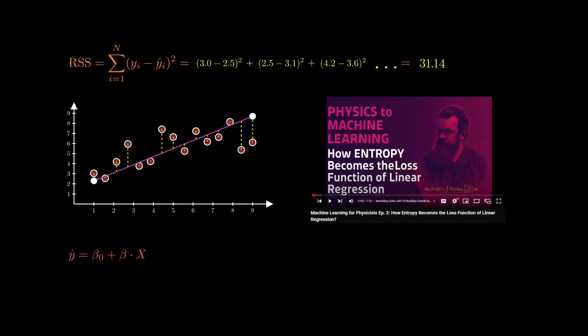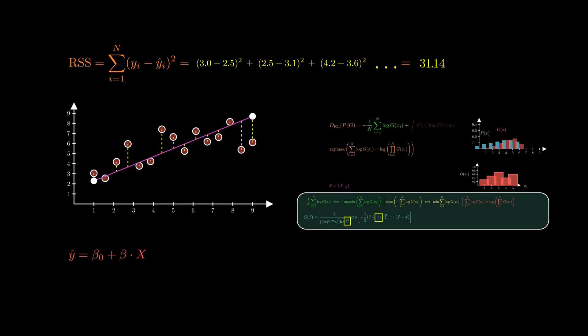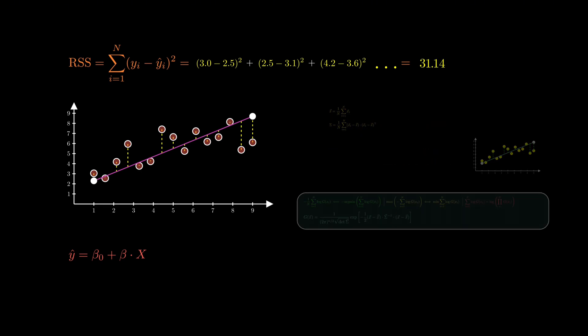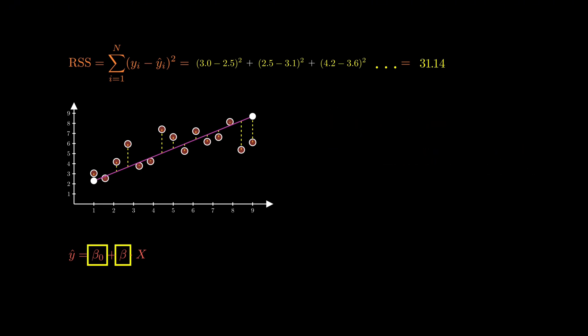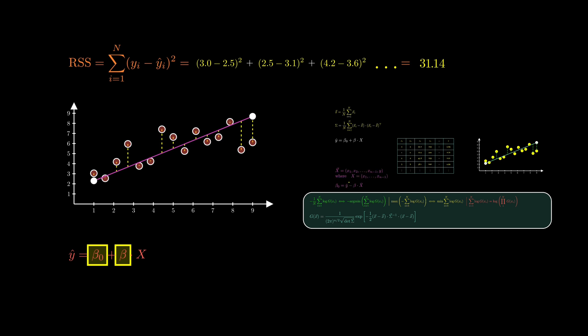In our last video, we used relative entropy to derive linear regression but we never even mentioned RSS. We showed that under certain conditions, the rows of our dataset could be modeled using a multivariate Gaussian distribution. From there, we leaned on the concept of relative entropy, borrowed from physics, to estimate the unknown parameters of that distribution. But when it came to estimating the unknown parameters of linear regression, things got a bit messy. We had to perform a rather complicated integration just to relate the multivariate Gaussian parameters to the regression coefficients. In other words, we took the long way around.